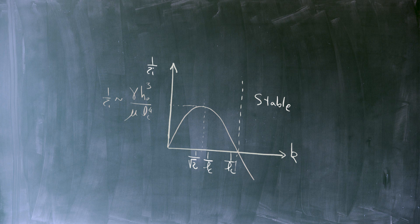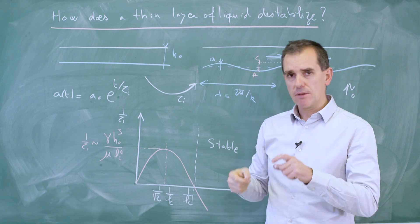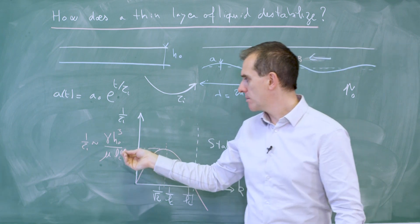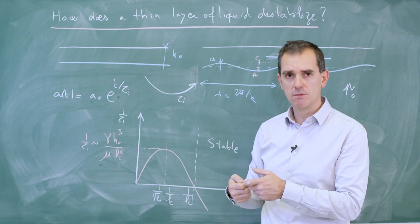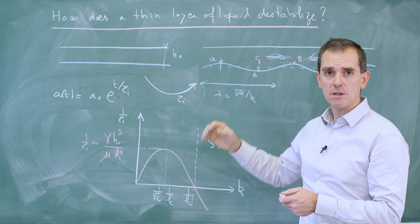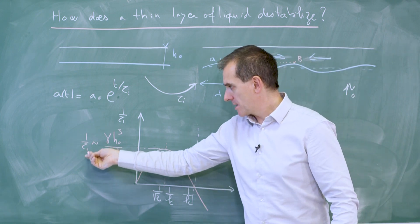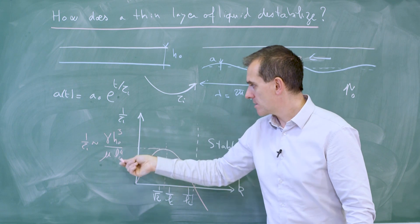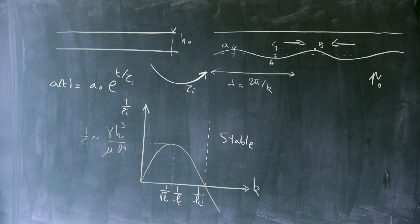This expression tells you that the thinner the layer, the smaller the growth rate. So you have an interest in depositing a thin layer in order to have a long time to go from the initial state to the unstable one. The whole trick of the painting is to have a drying time smaller than tau_i. If you manage to take a paint with a drying time smaller than the time it takes for the layer to destabilize, then you will never observe the instability and you will have a uniform painting layer at the surface of the ceiling.